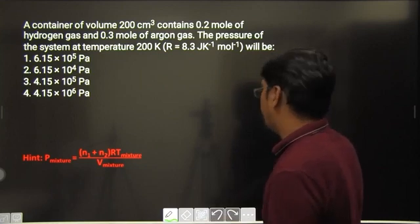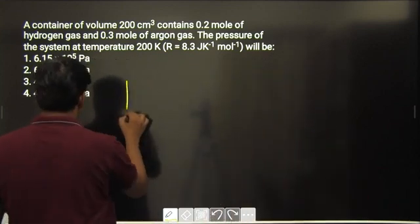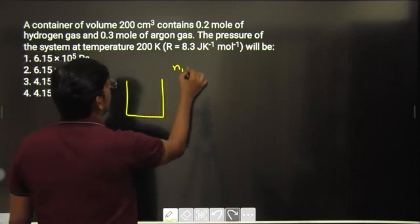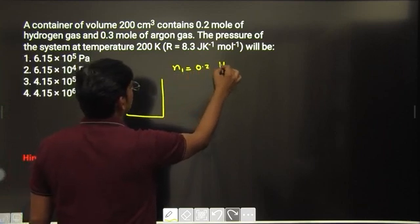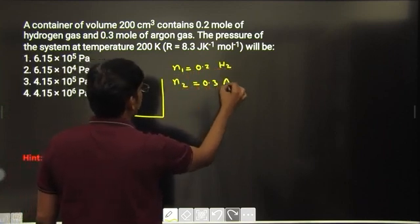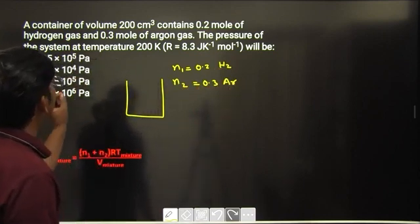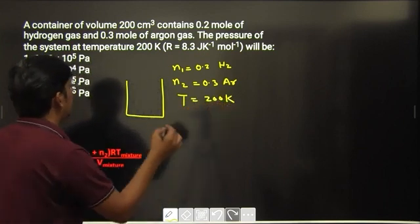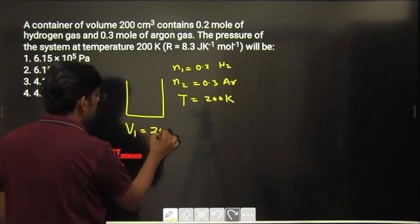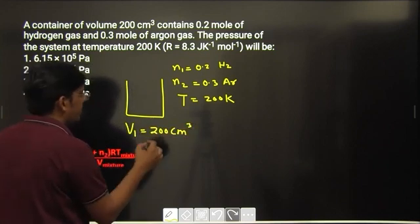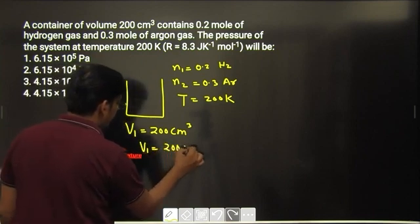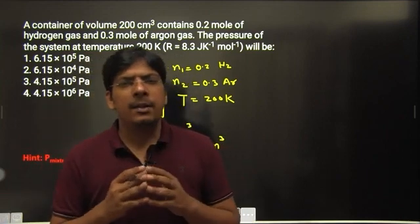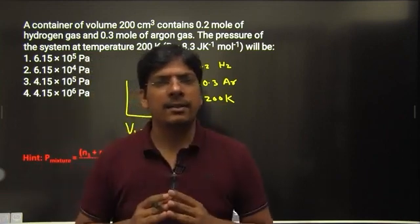A container of volume 200 centimeter cube contains 0.2 mole of hydrogen gas and 0.3 moles of argon gas. The pressure of this system at temperature 200 kelvin will be. This is very easy question to understand. Volume is 200 centimeter cube, we will convert this into SI unit, this is 200 multiplied by 10 to the power minus 6 meter cube. Now this container contains the mixture of two chemically non-reacting gases.